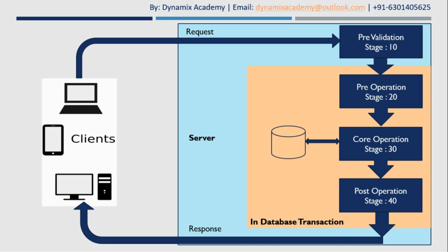The next place you can register your custom business logic is before the main operation — that is called pre-operation. Both pre-validation and pre-operation are pre-event stages because they execute before the main event. The difference between them is that any code registered on the pre-operation stage will be executed after the database transaction has already begun, whereas pre-validation executes before any database transaction is initiated.